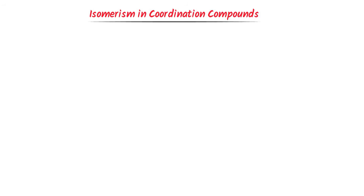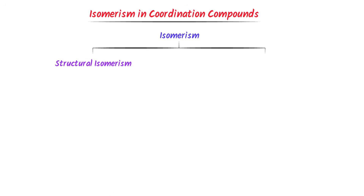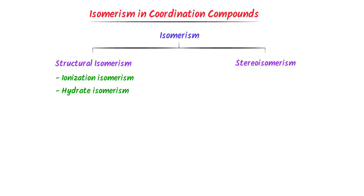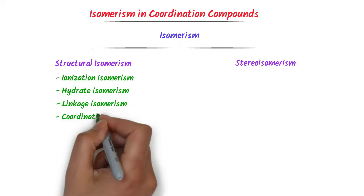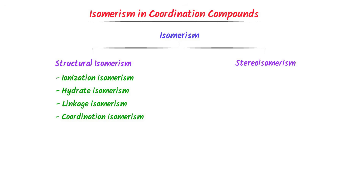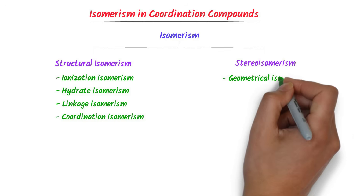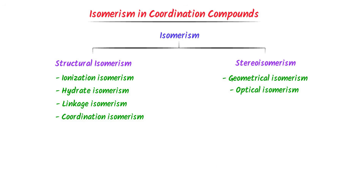Isomerism in coordination compounds is divided into two types: structural isomerism and stereoisomerism. Structural isomerism is further divided into four types: ionization isomerism, hydrate isomerism, linkage isomerism, and coordination isomerism. Stereoisomerism is divided into two types: geometrical isomerism and optical isomerism.